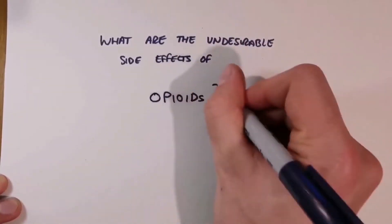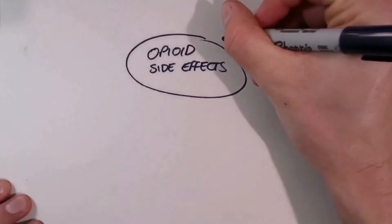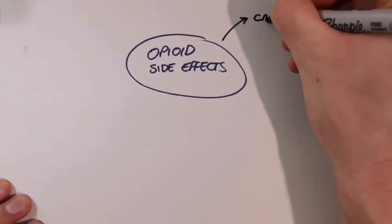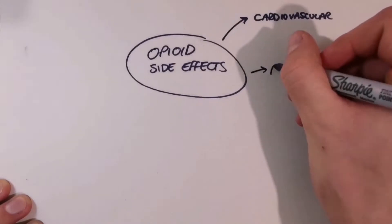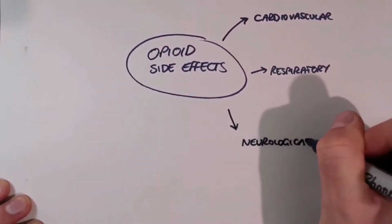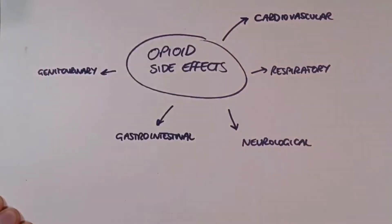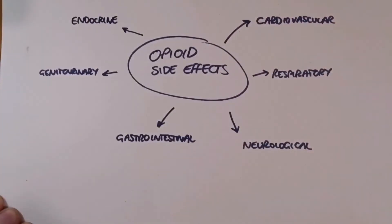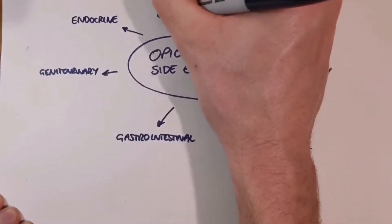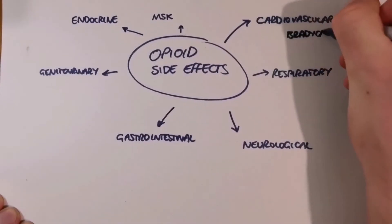Hi guys and welcome back to Anesthesia. Opioids have a really wide array of side effects, so it's best to categorise them by body system. There are cardiovascular, respiratory, neurological, GI, genitourinary, endocrine, and MSK or skin side effects to think about.